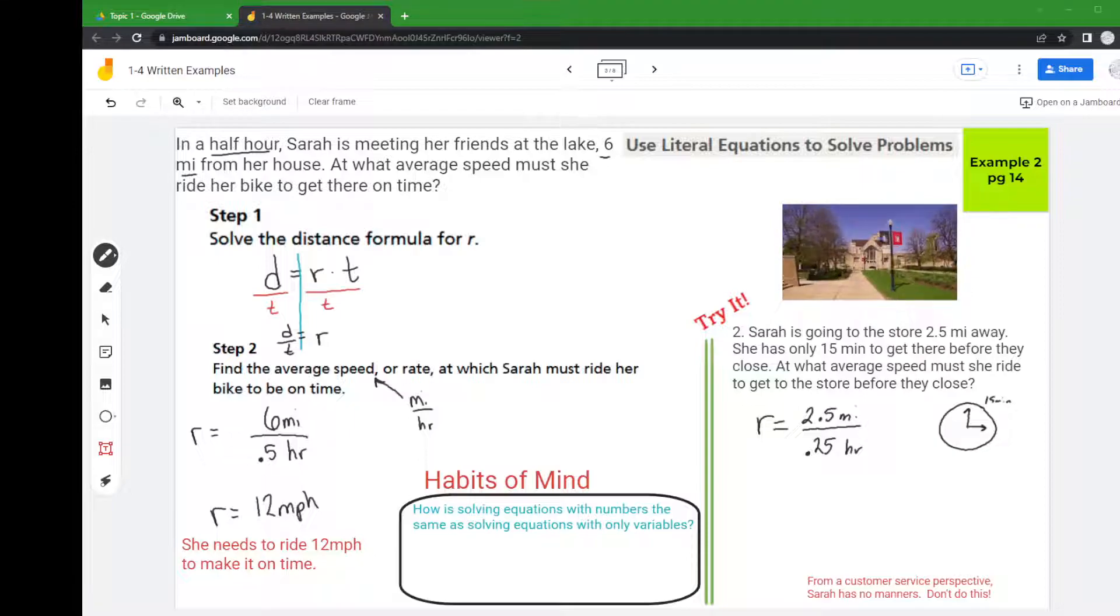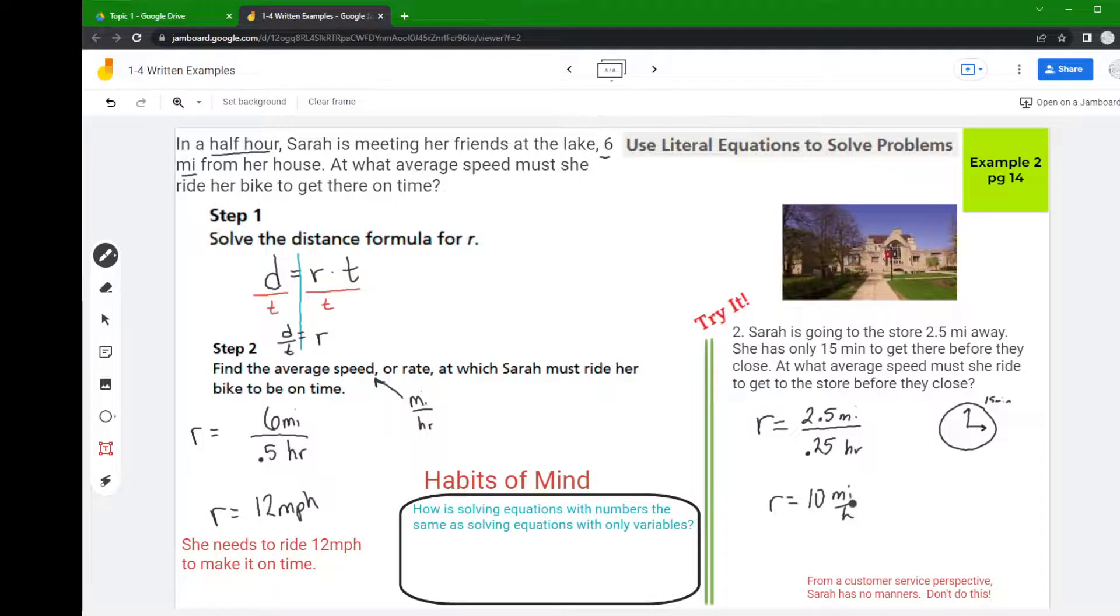So then you just take your calculator, you mess up typing in your calculator, but 2.5 divided by 0.25 is 10. So she would need to pedal to the metal at 10 miles per hour to make it on time before they close. That being said, she's not really giving herself time to shop, is she?